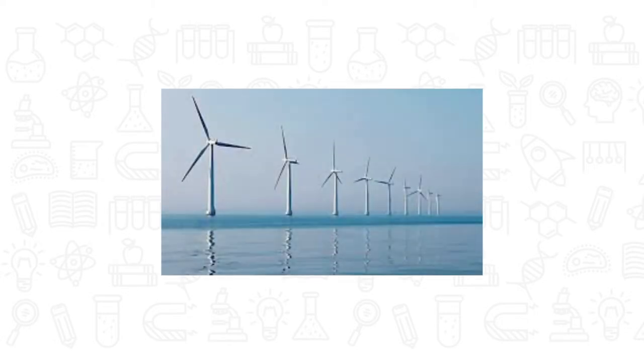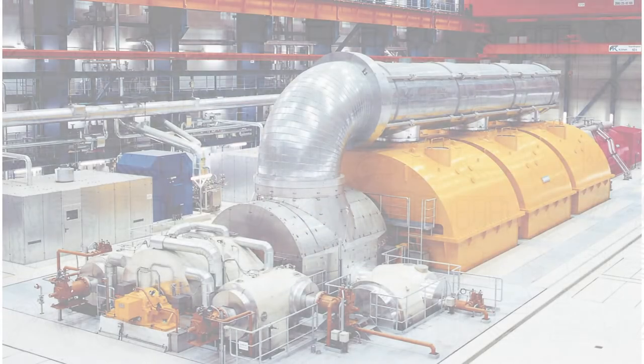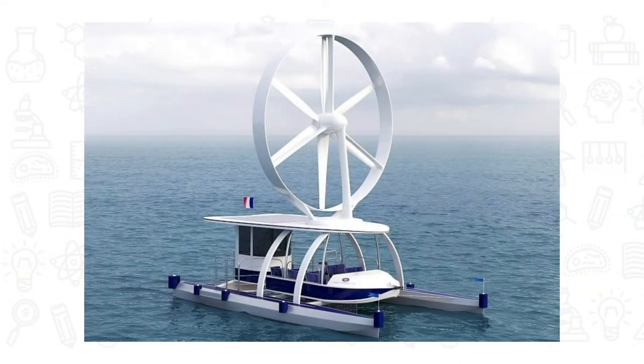Wind power uses wind to provide mechanical power through wind turbines to turn electrical generators for electrical power. Wind power can be used to drive electric generators and is used by sailors of ships and boats to power the ship.